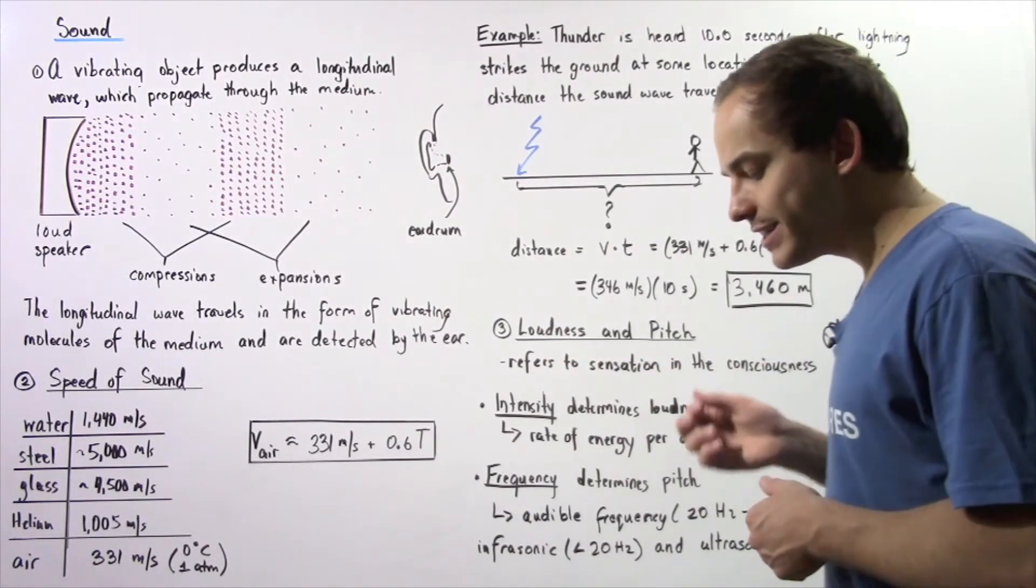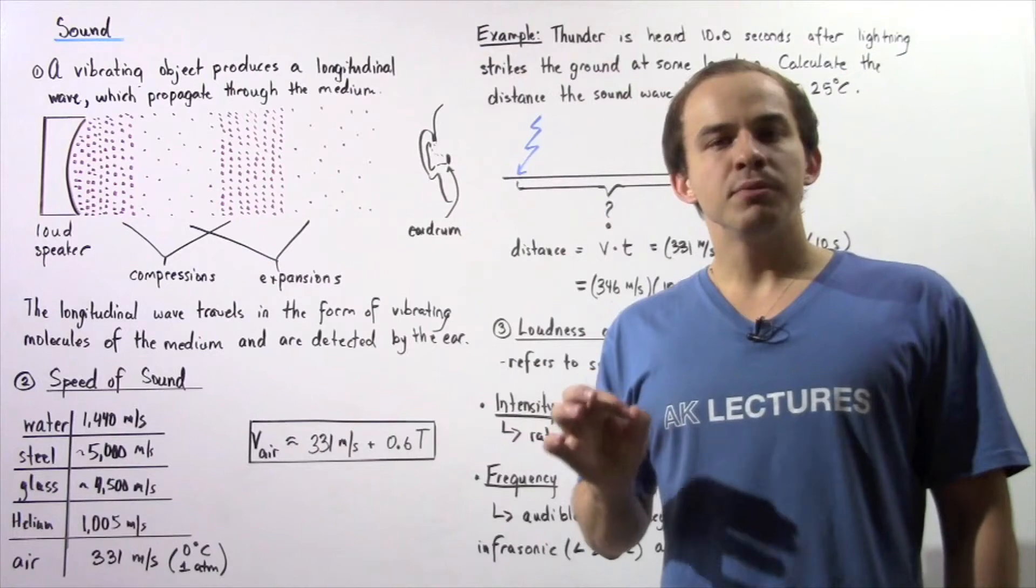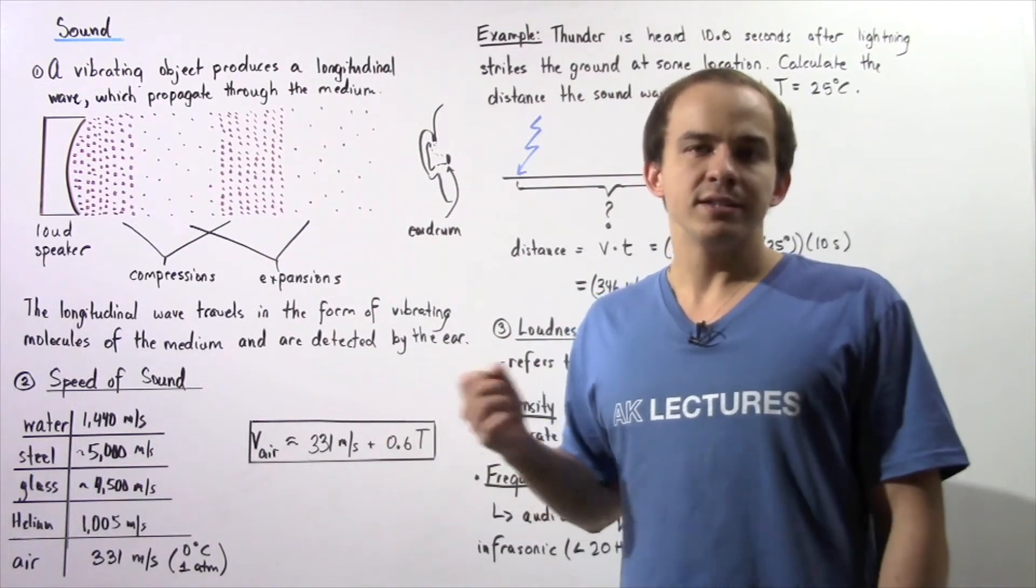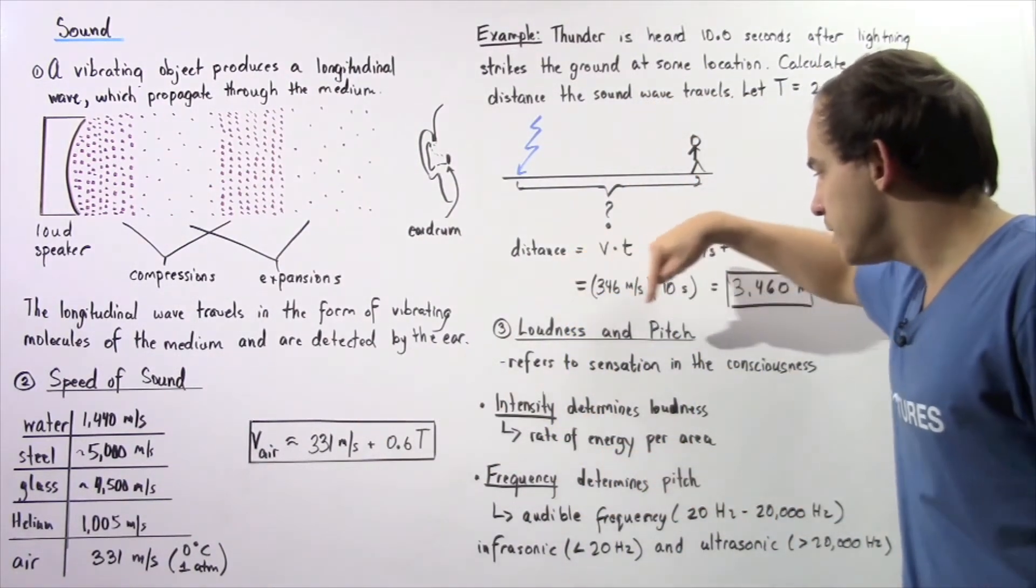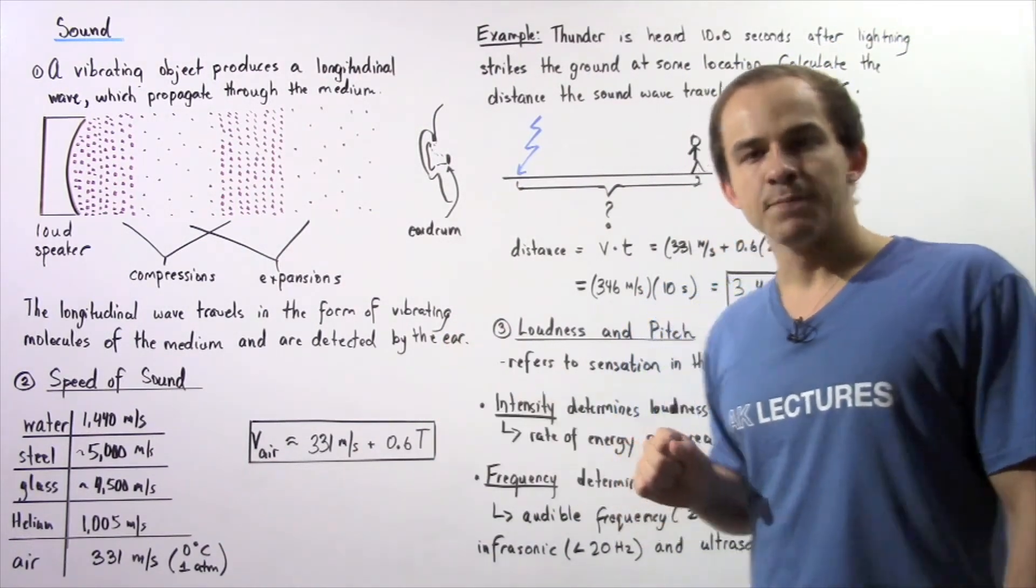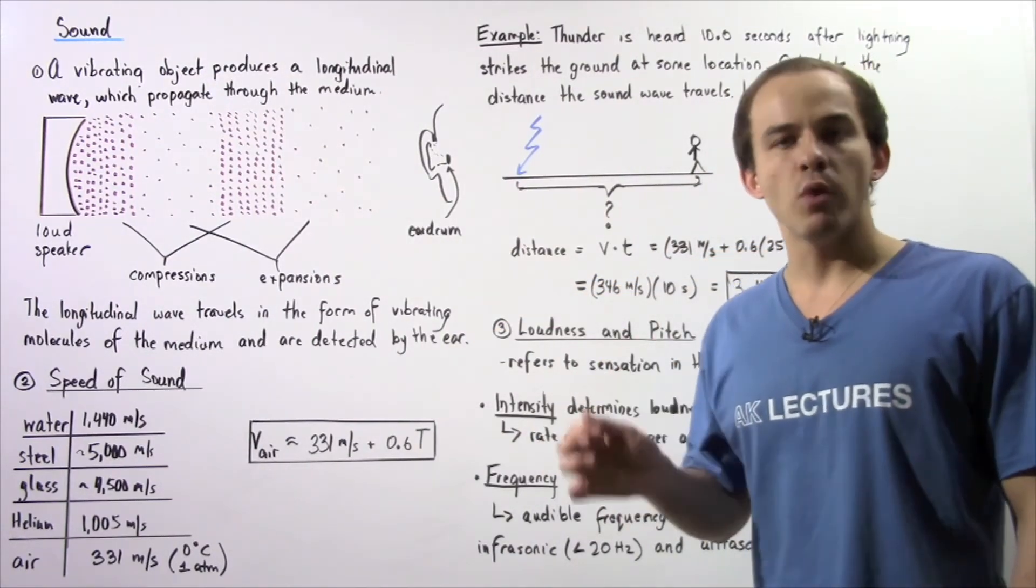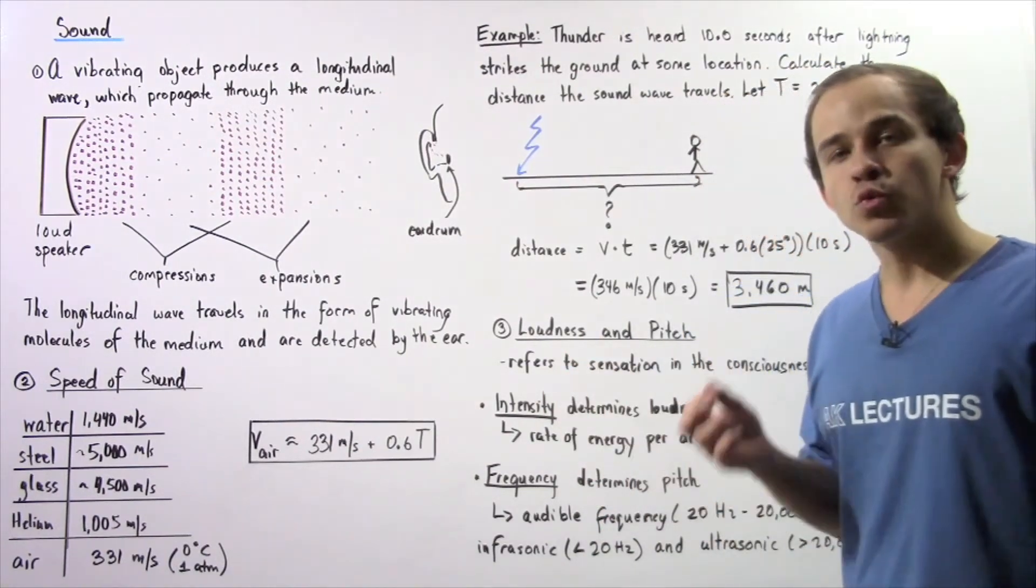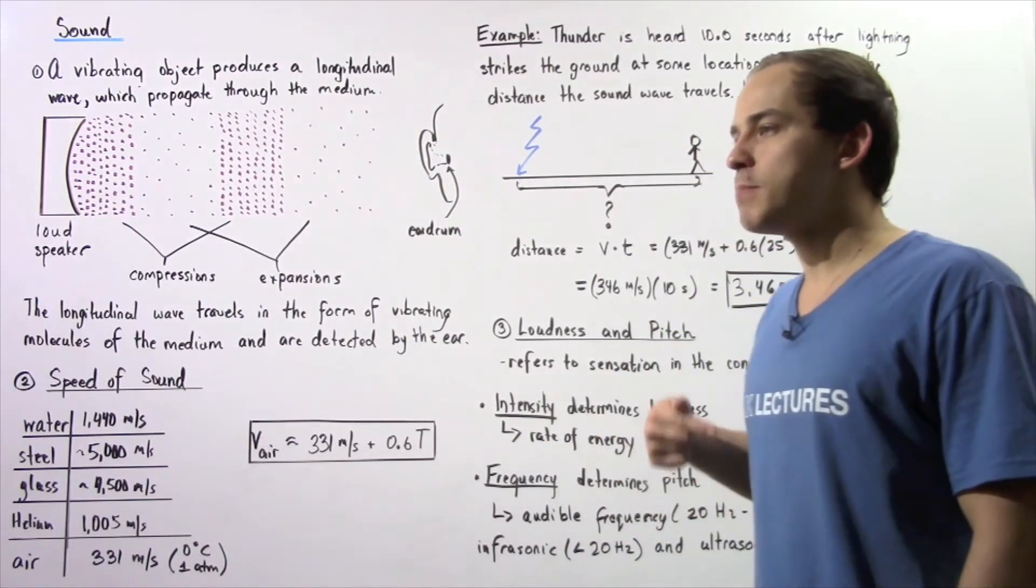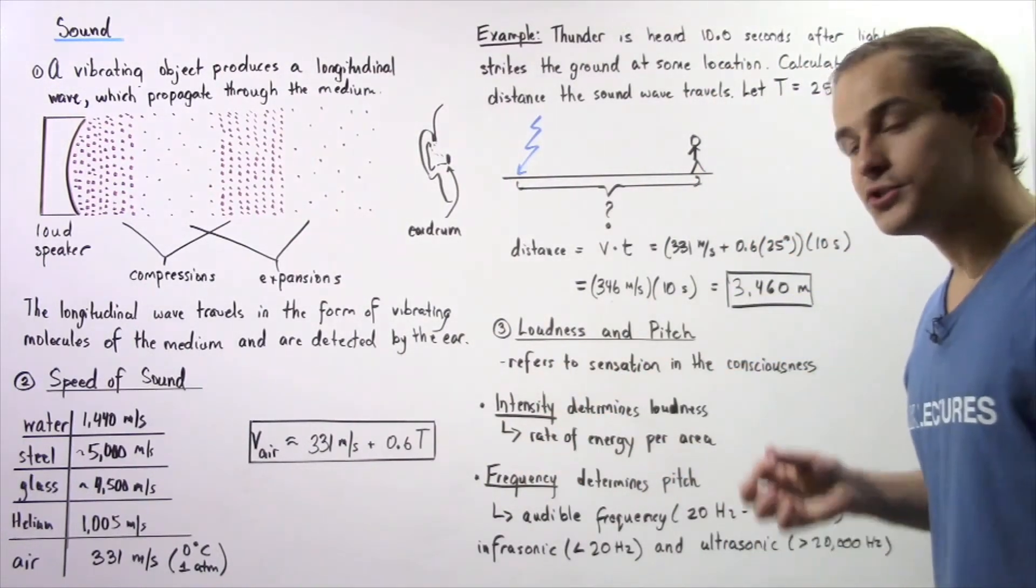What exactly is loudness and what exactly is pitch? Both of these quantities are simply sensations that are perceived by the human brain, and these are relatively subjective. Both types of quantities are each determined by their own physical quantity. Intensity determines the loudness of a sound wave. Intensity is simply the rate of change of energy per unit area, or how much power travels through a certain area. Frequency determines our pitch.